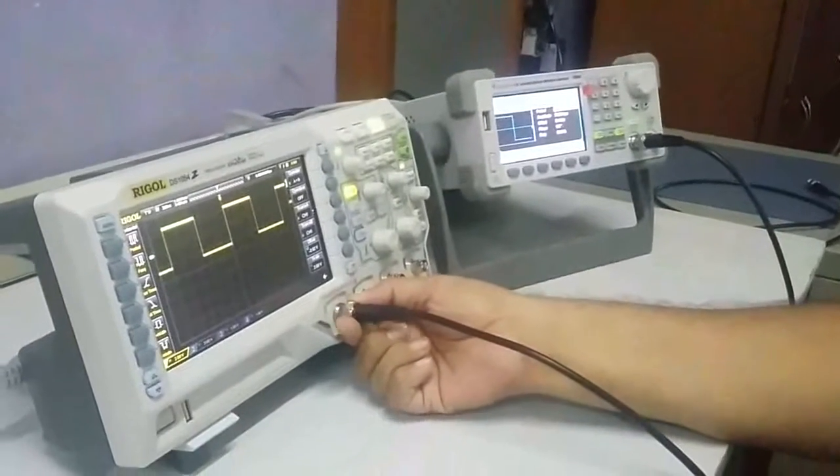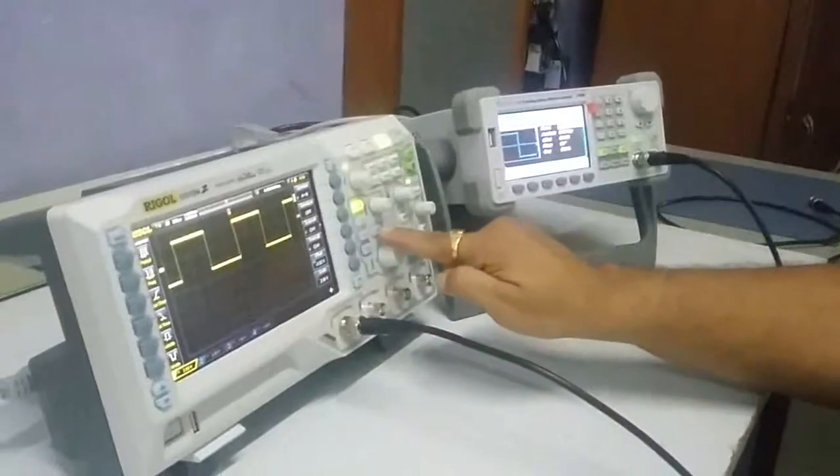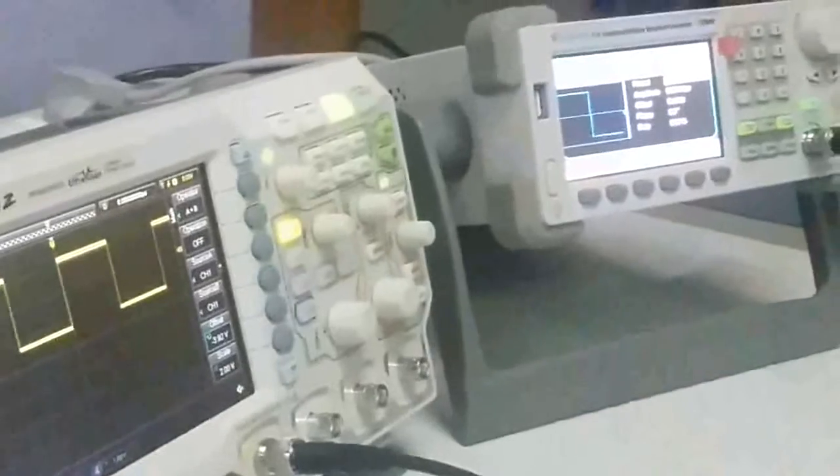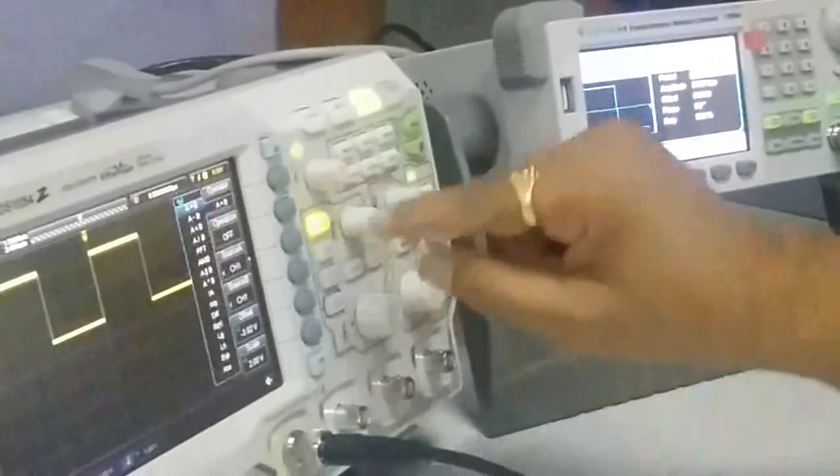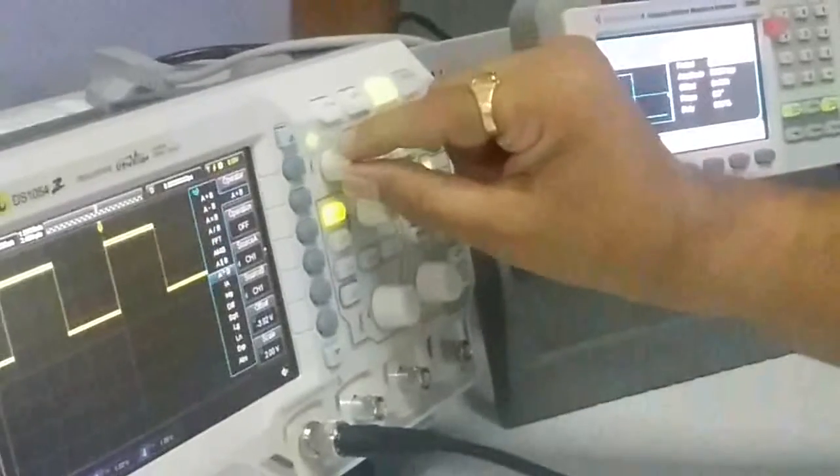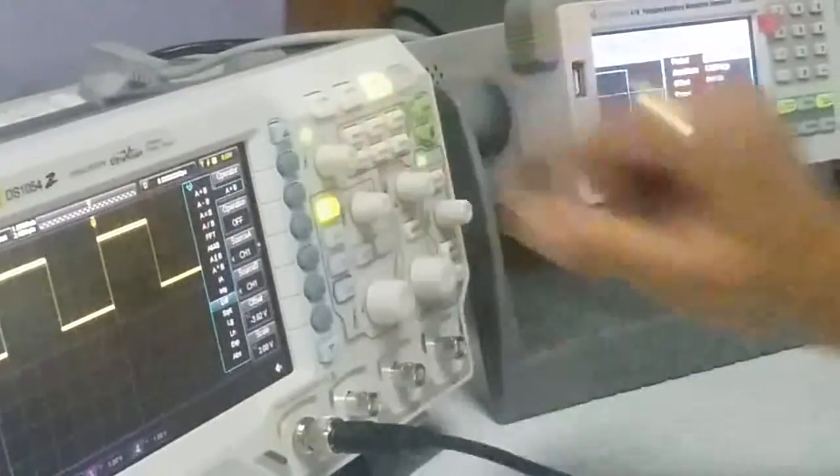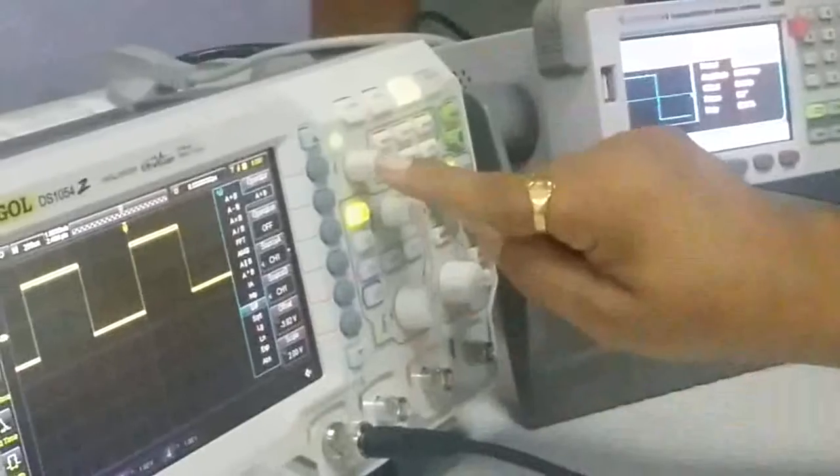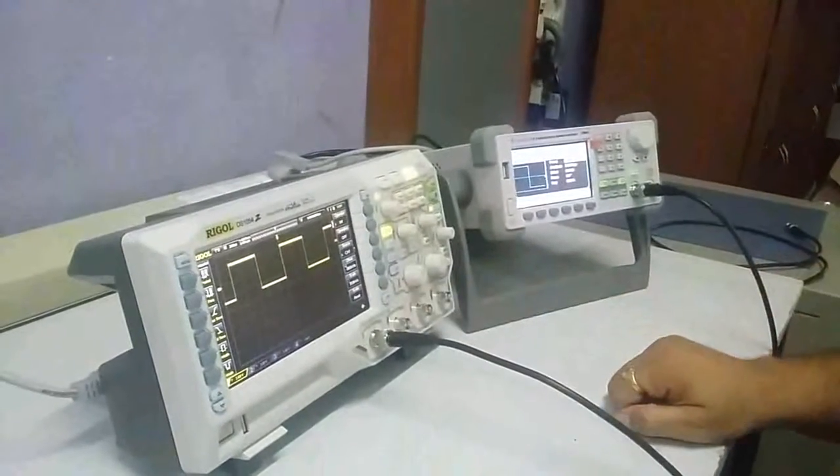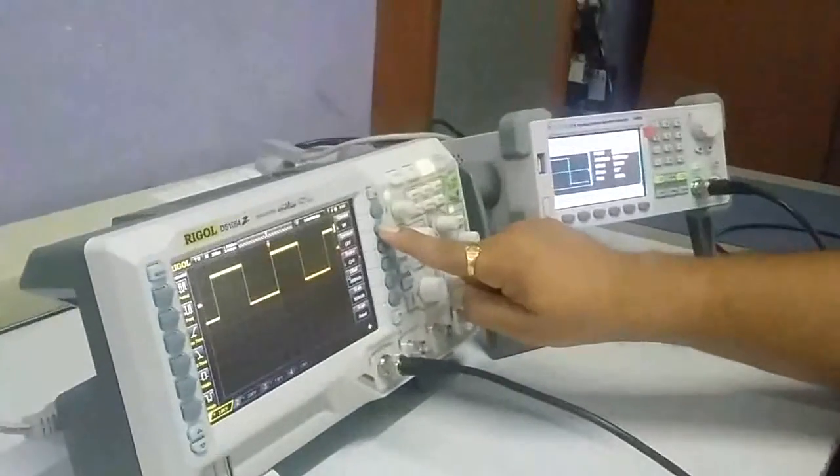This is a square wave. Now again I will go for the math function. I will select the math function and then select the differentiation function. So I have selected differentiation function. I will reset the scale and now I will turn operation on.